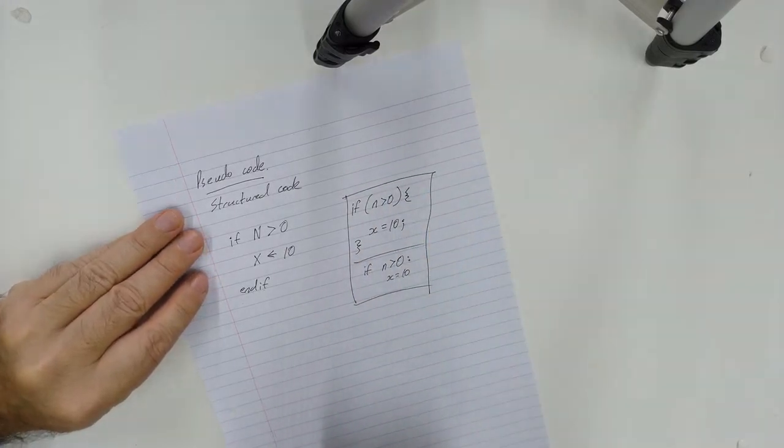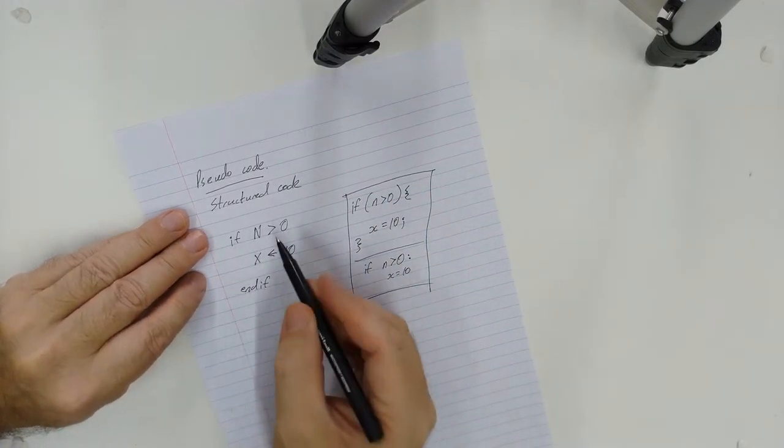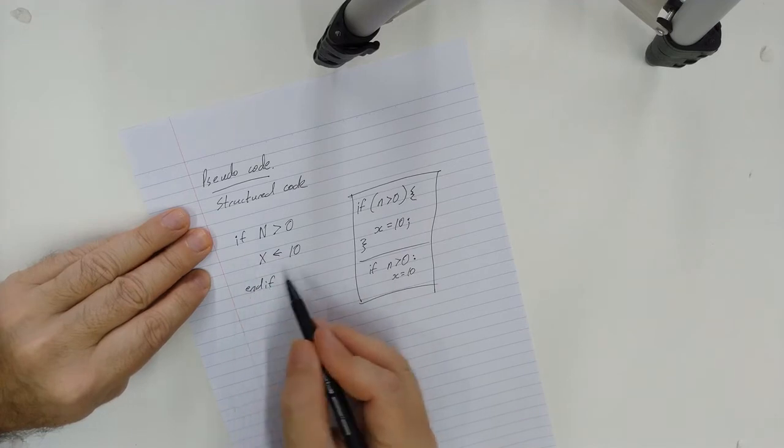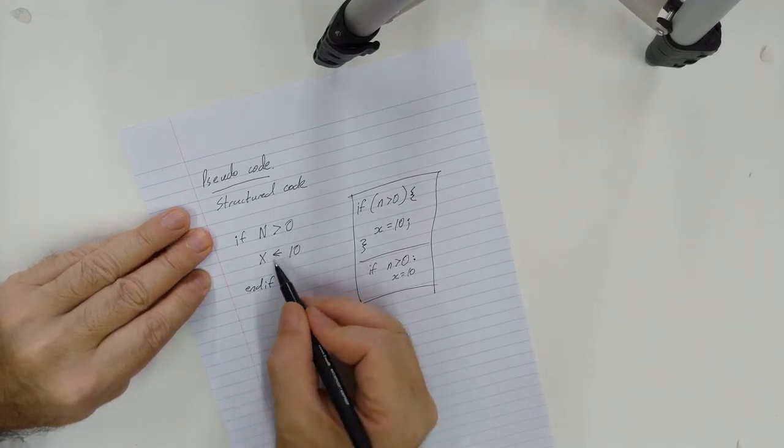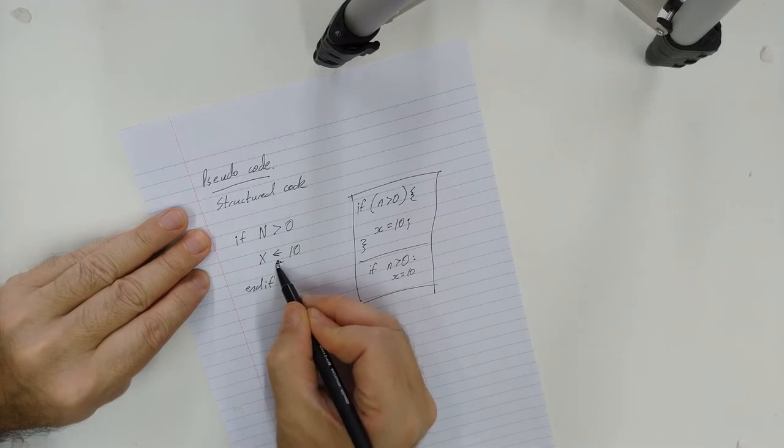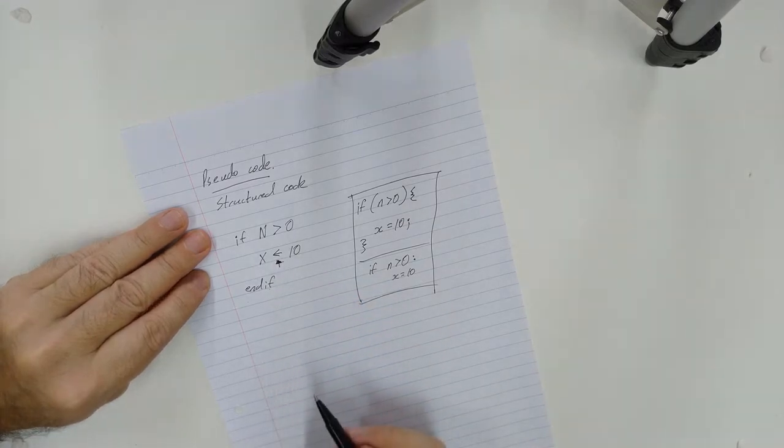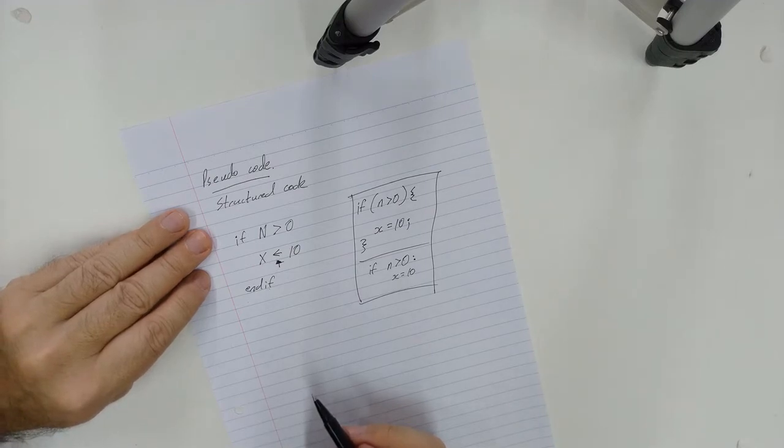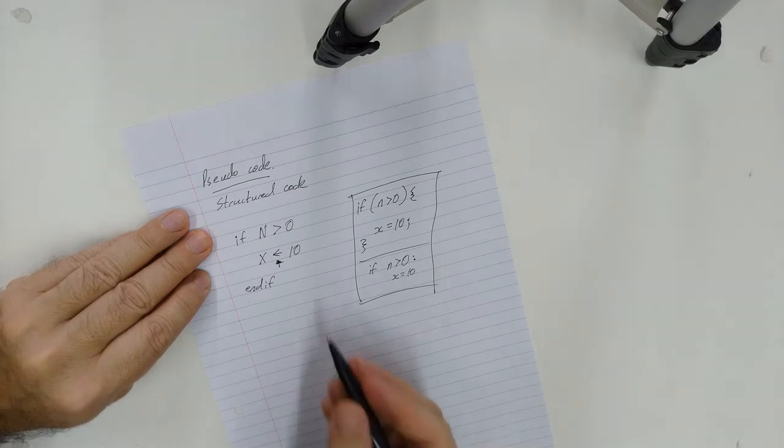The idea with the pseudocode is that it is language agnostic. Note here the use of the little arrow. Now this is not mandatory, but it is what is generally used, and you will see this in your textbooks and in some of the work resources that I give you.